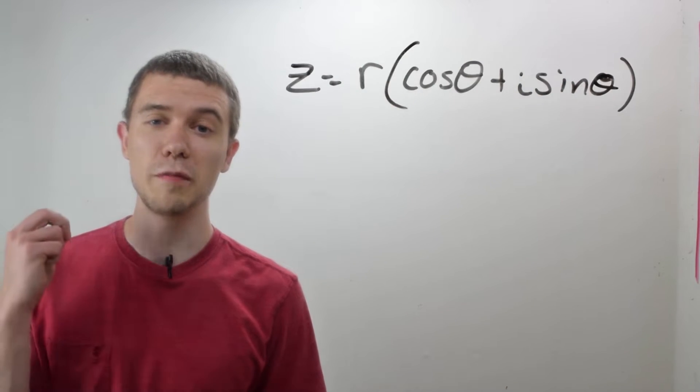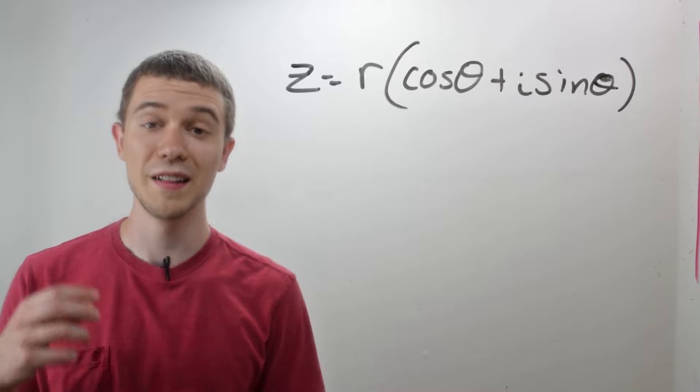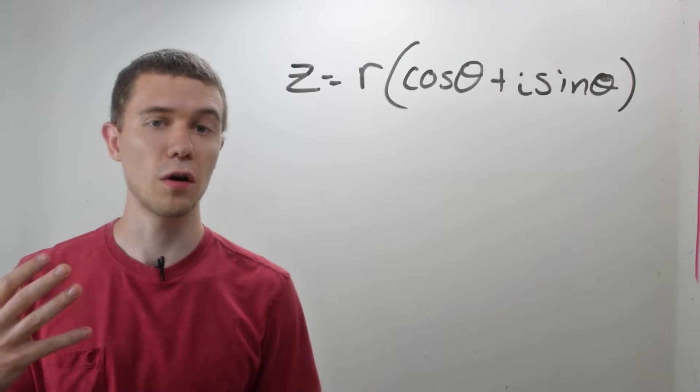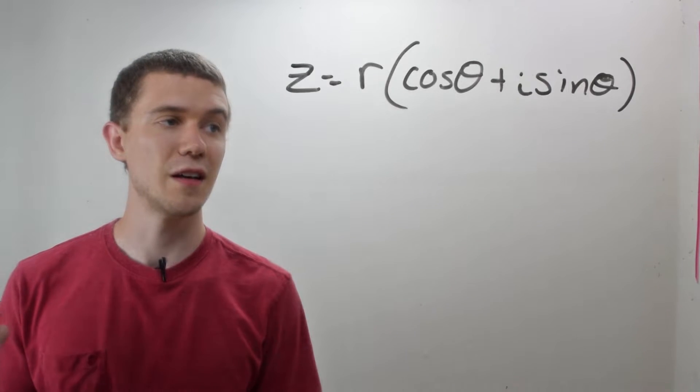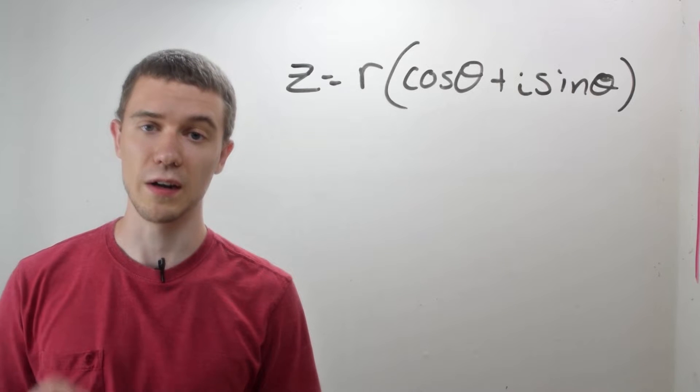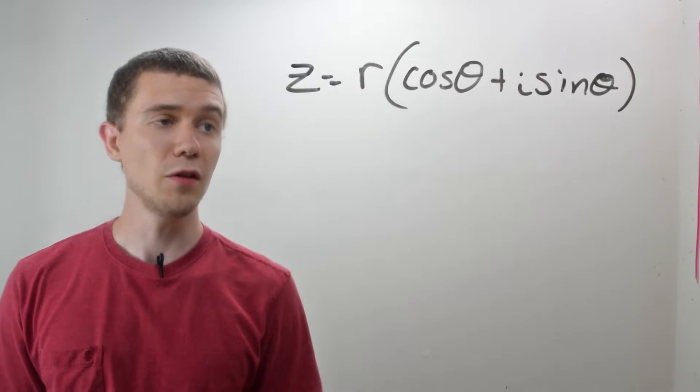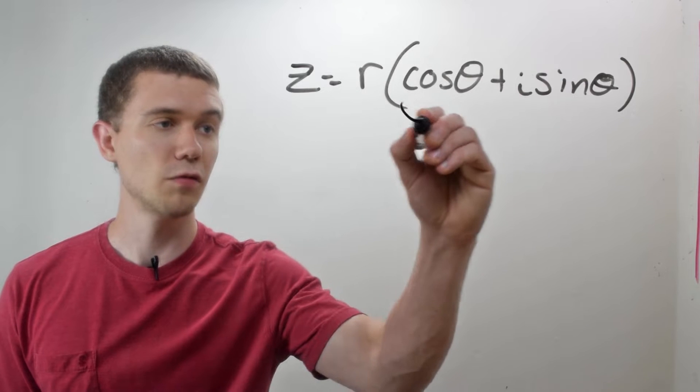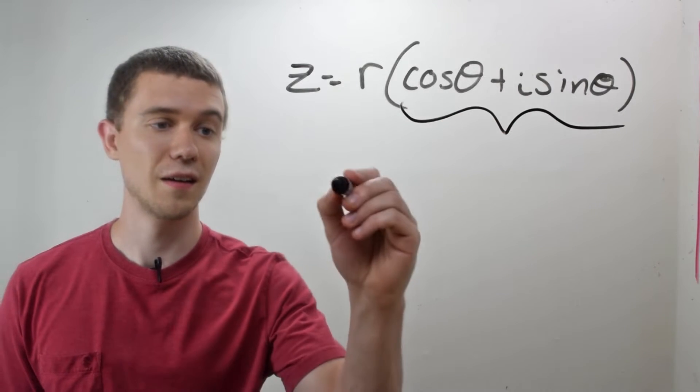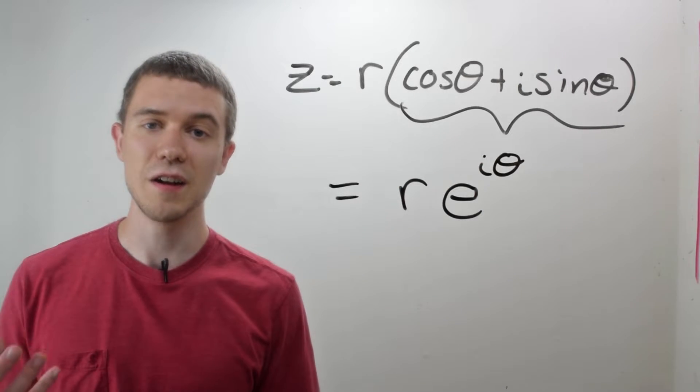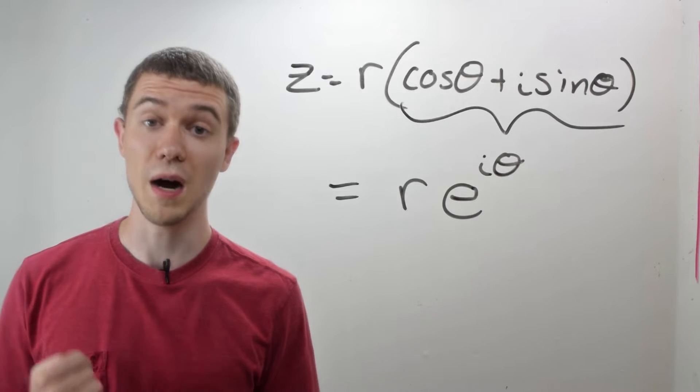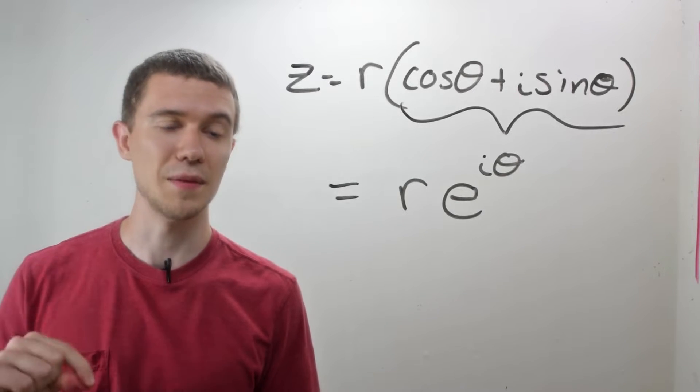Up to this point, you've become familiar with the polar form of a complex number that says any complex number z can be written in the form r, which is the modulus of z, times cosine theta plus i sine theta, where theta is the argument of that complex number. But now that we know the complex exponential function, I can rewrite this part as just e to the i theta. And now we have yet another form, the exponential form of a complex number, which is just r, the modulus of that complex number, times e to the i theta.